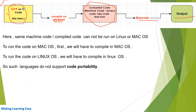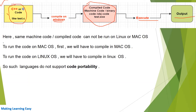So how can we run this compiled code of C or C++ on other platforms? Suppose we want to run it on the Mac operating system — we will have to compile the code again on the Mac system, and then we will be able to run it on Mac. The same applies to Linux: you will have to compile the code on the Linux machine, and then you will be able to run it on Linux. This is the platform dependency of the language.